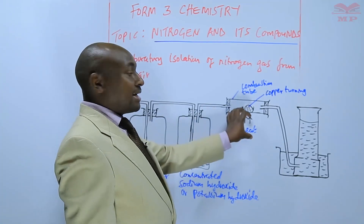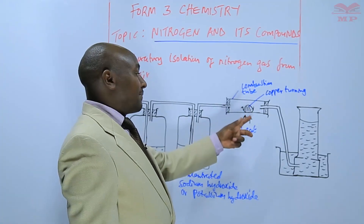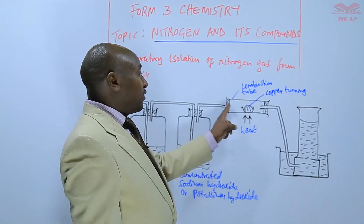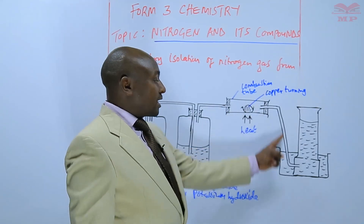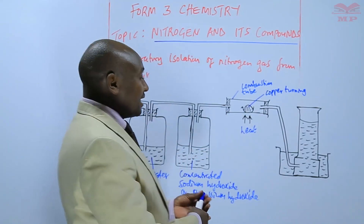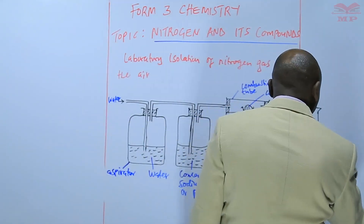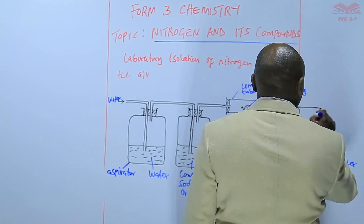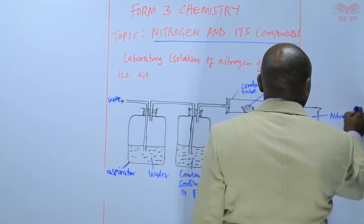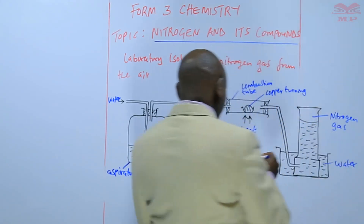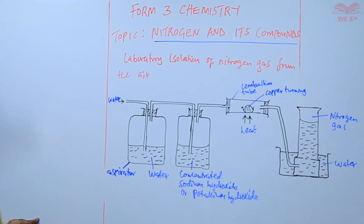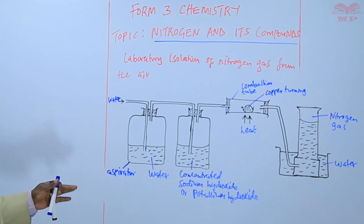They will be oxidized to copper(II) oxide. Those copper turnings will not react with nitrogen and also will not react with the noble gases. So the nitrogen continues and is collected over water as nitrogen gas. That diagram basically shows how laboratory isolation of nitrogen gas from the air can take place.